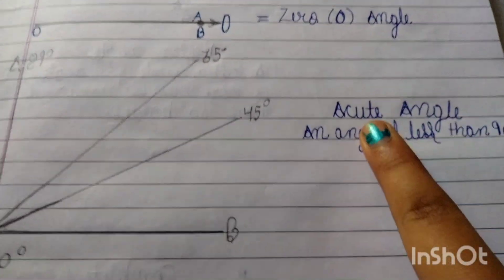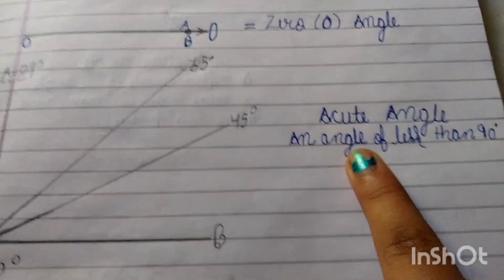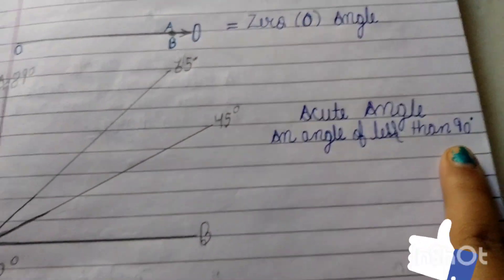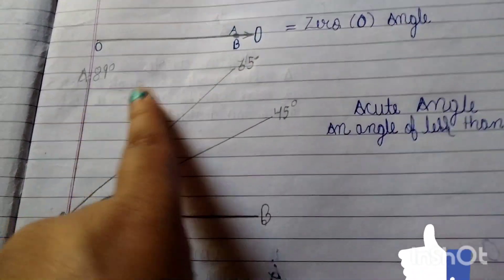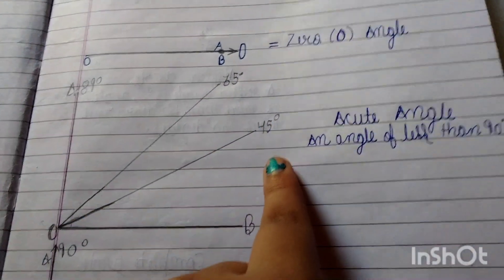Acute Angle: An angle of less than 90 degrees. For example, 89 degrees, 65 degrees.